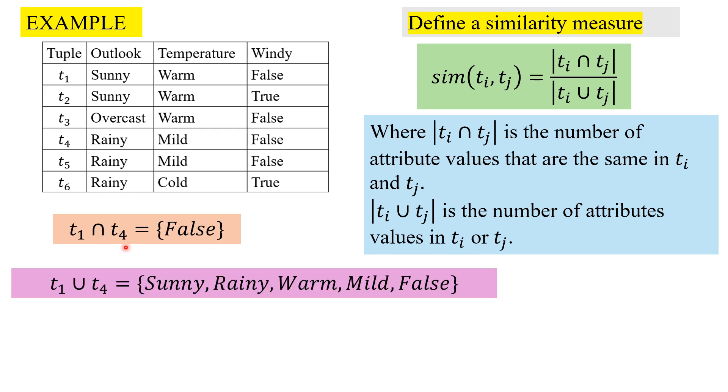If we take t1 and t4, the intersection is in the last column where the value for windy is false in both. In the union there are five attribute values: sunny, warm, false, rainy, and mild. Based on this, the similarity is 1 by 5.